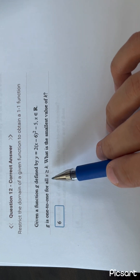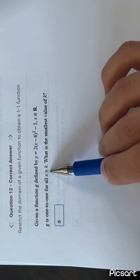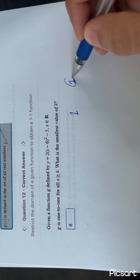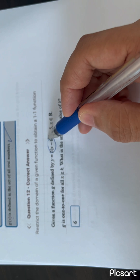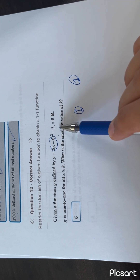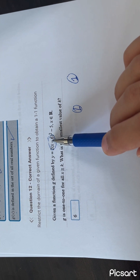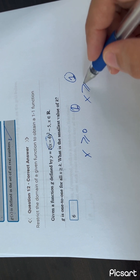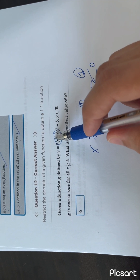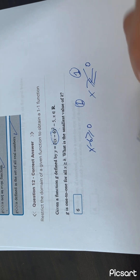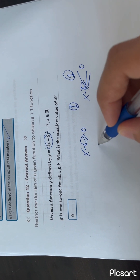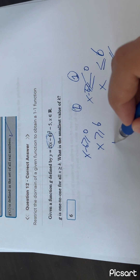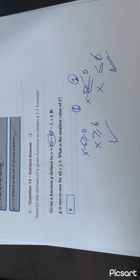For this equation to be a 1-to-1 function, you need to find where to restrict the domain. The problem is inside the bracket: if you put 1 or minus 1, you always get the same answer. So you must restrict so all values inside are either positive or all negative. That means x minus 6 must be greater than or equal to zero, or x minus 6 must be less than or equal to zero — giving x ≥ 6 or x ≤ 6. Each restriction yields a 1-to-1 function, so the cutoff point k is 6.